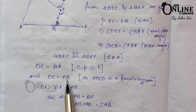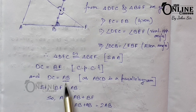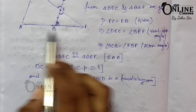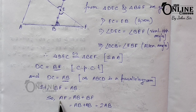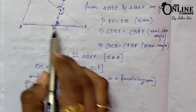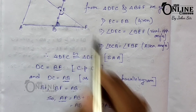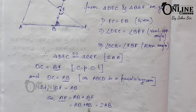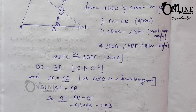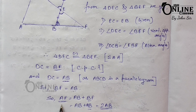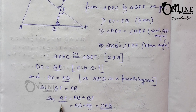Since ABCD is a parallelogram, DC equals AB. Also DC equals BF, therefore BF equals AB. Now AF equals AB plus BF, and substituting BF equals AB gives AF equals AB plus AB, so AF equals 2AB — proved.